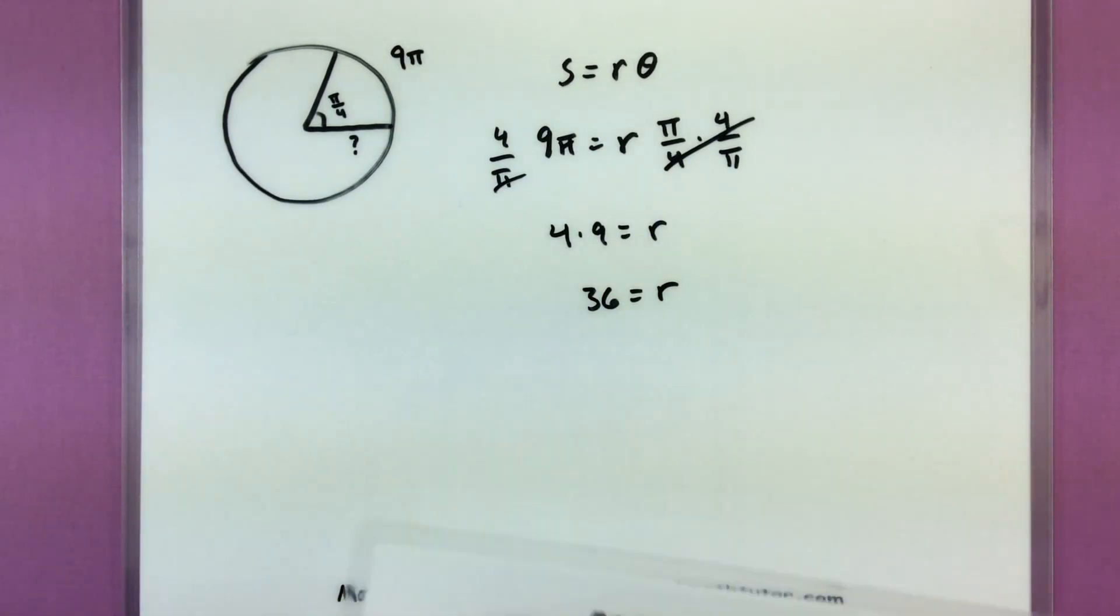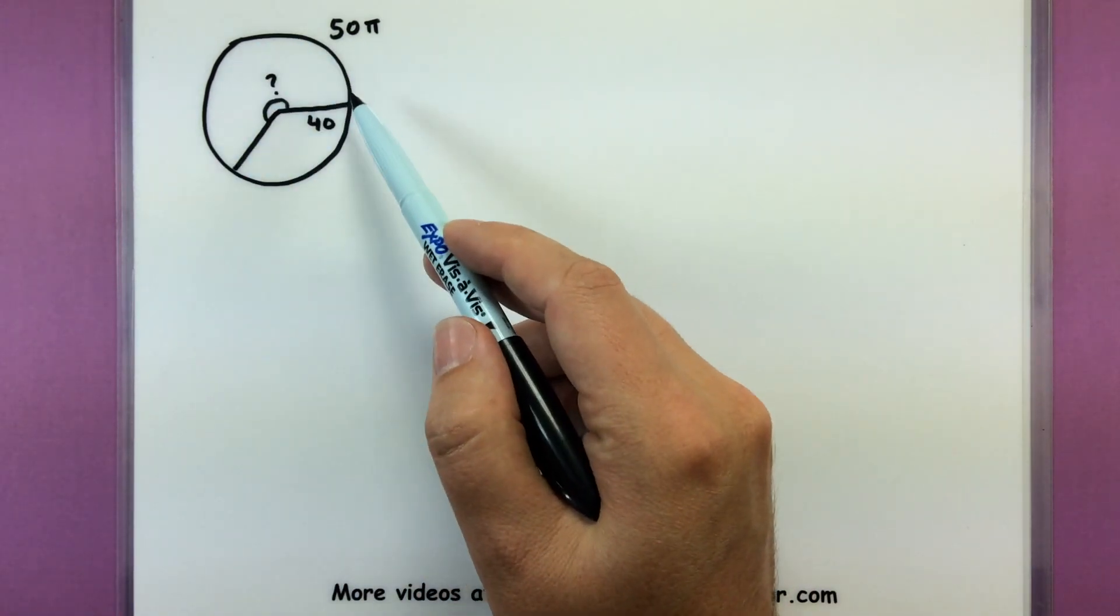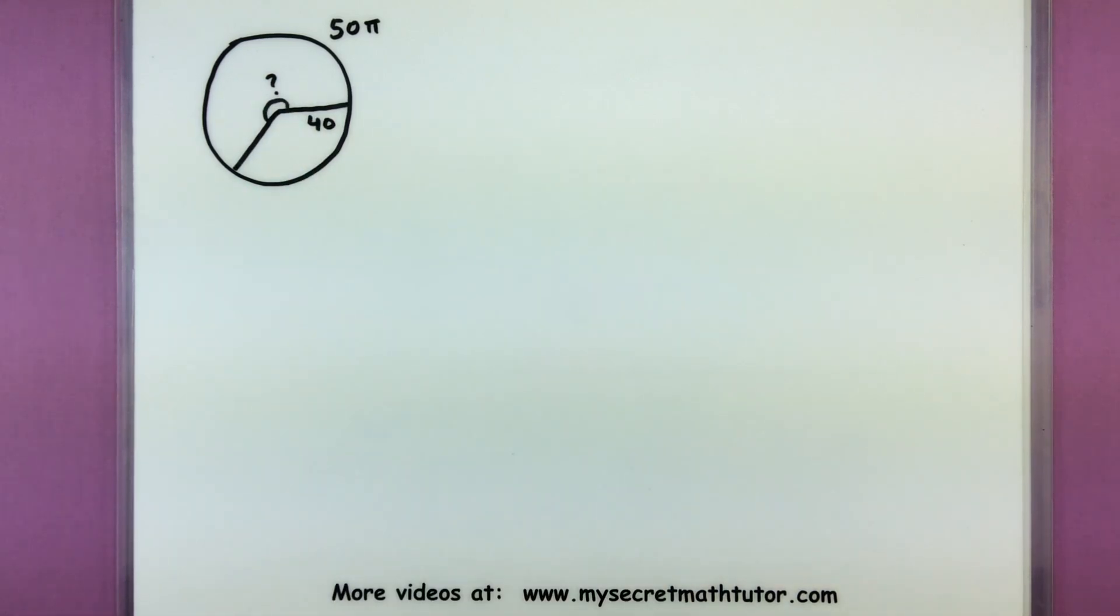Alright, one more case to cover. This one, we have the arc length and the radius, but I don't know the angle inside the circle.